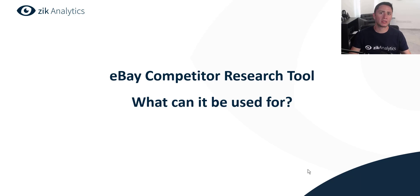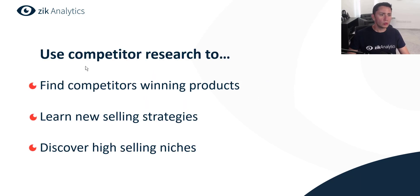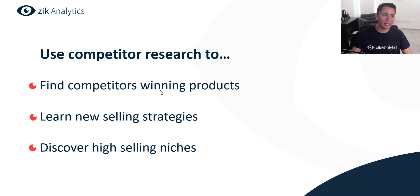Most people use competitor research mainly for one thing: finding best selling products from their competitors. But to utilize the full power of the eBay competitor research tool of Zeek, you can use it in different ways. Use case number one: find competitors' winning products. Number two: learn new selling strategies. Number three: discover high selling niches.